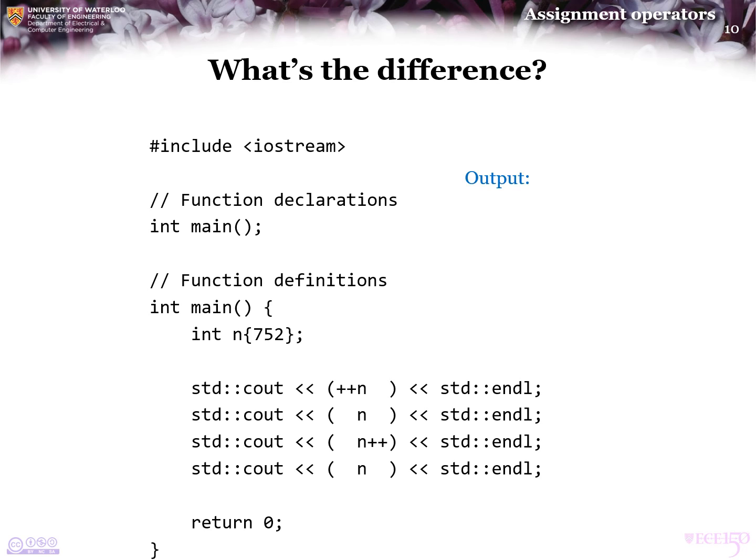Let's see what happens. So, what's the output? Well, when we execute this first line, plus plus n first adds 1 to the value of n, and then returns that new value. So, 752 with 1 added onto that is now 753. That is the value that is printed to the screen.